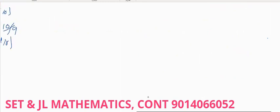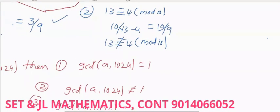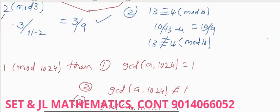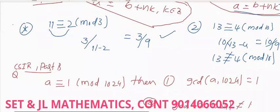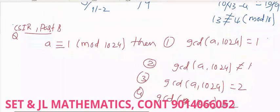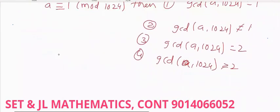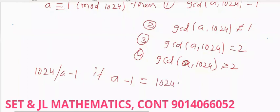As per the definition of congruence relation, A congruent to 1 modulo 1024 means 1024 divides A minus 1. So A minus 1 is equal to 1024 times K, where K belongs to Z. Therefore A is equal to 1 plus 1024 times K.